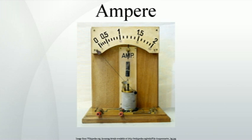The international ampere was an early realization of the ampere, defined as the current that would deposit 0.001118000 grams of silver per second from a silver nitrate solution. Later, more accurate measurements revealed that this current is 0.999985 A.